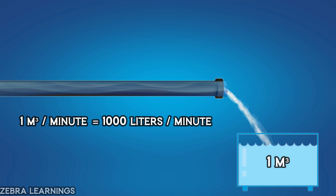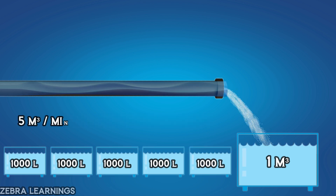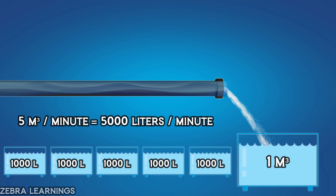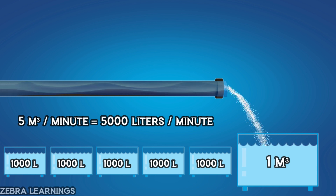A water flow rate of 5 cubic meters per minute means that 5000 liters of water flow through the pipeline in 1 minute.